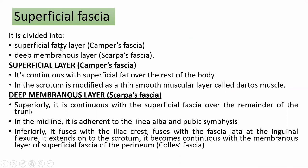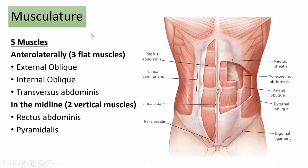The superficial fascia is divided into the superficial fatty layer — Camper's fascia — and the deep membranous layer — Scarpa's fascia. Camper's fascia is continuous with the superficial fat over the rest of the body; over the scrotum it is modified as a thin smooth muscular layer called dartos muscle. Scarpa's fascia superiorly is continuous with the superficial fascia over the trunk; in the midline it is adherent to the linea alba and symphysis pubis; inferiorly it fuses with the iliac crest, and over the scrotum becomes continuous with Colles' fascia.